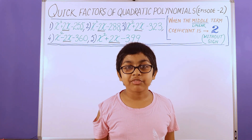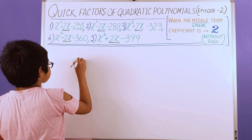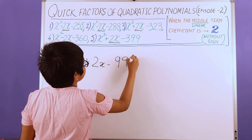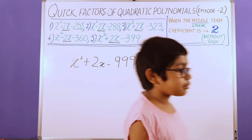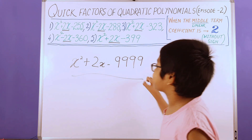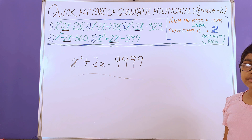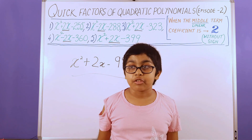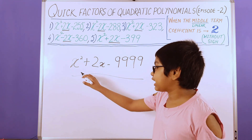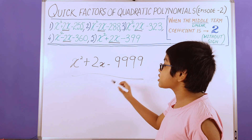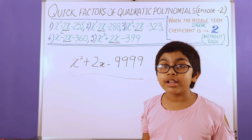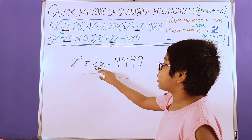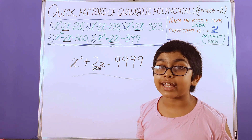Now I've got a sum for you all: x squared plus 2x minus 9999. I'm giving you a few moments to copy this polynomial. This polynomial looks difficult, but it actually has a trick to it, and I hope you can find the trick. Remember, there is number 2 as the middle term coefficient — don't forget that.